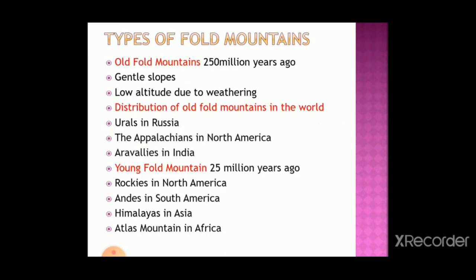There are two types of fold mountains. Old fold mountains were formed about 250 million years ago and their features are gentle slopes and low altitude, due to weathering by agents of gradation over many years — rainfall, glacier erosion — causing them to become lower. Young fold mountains are usually very steep and very pointed. The Ural Mountains in Russia, Appalachians in North America, and Aravallis in India are examples of old fold mountains.